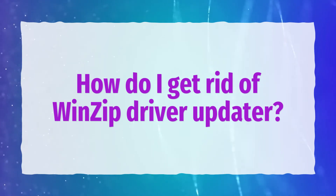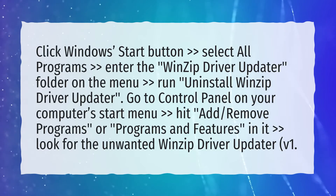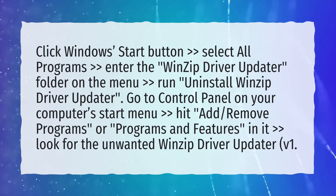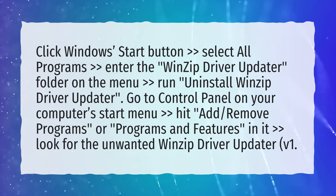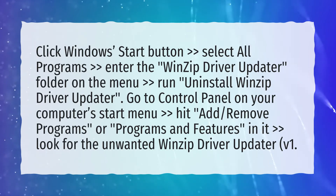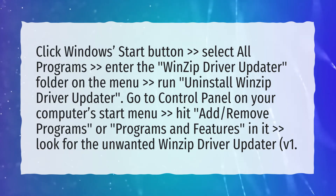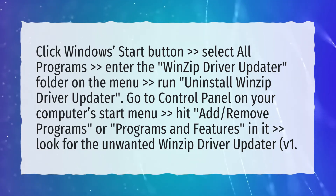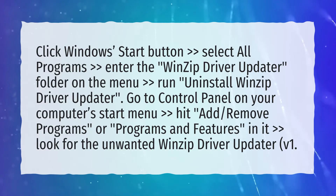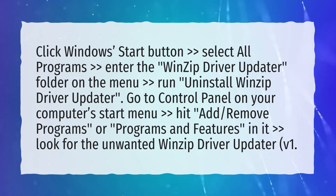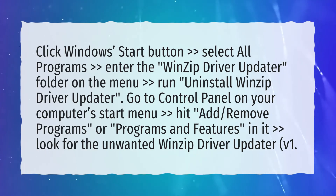How do I get rid of WinZip Driver Updater? Click the Windows Start button, select All Programs, enter the WinZip Driver Updater folder on the menu, and run Uninstall WinZip Driver Updater. Go to Control Panel on your computer's Start menu, hit Add/Remove Programs or Programs and Features, and look for the unwanted WinZip Driver Updater V1.